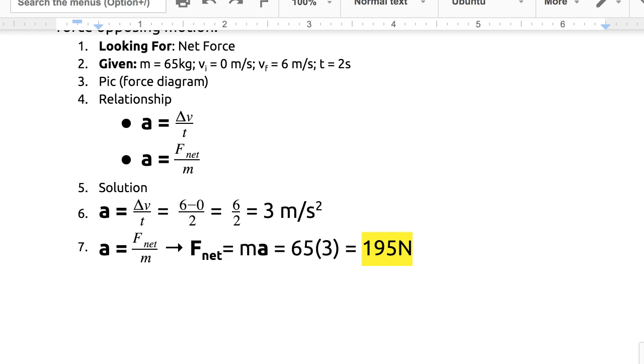Once I have that acceleration, I can use that to plug into the formula here. So I want to find the net force. I know the mass is 65 kilograms, and I know the acceleration now is 3 meters per second squared. So I can plug in the numbers here, or I could manipulate the equation to multiply both sides by mass to get net force equals mass times acceleration, or 65 times 3, which is 195 newtons.